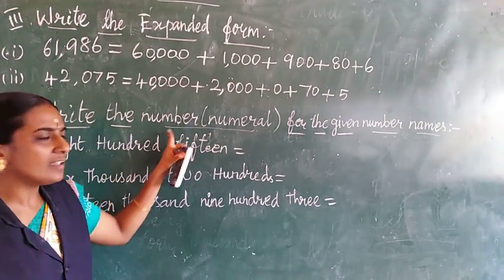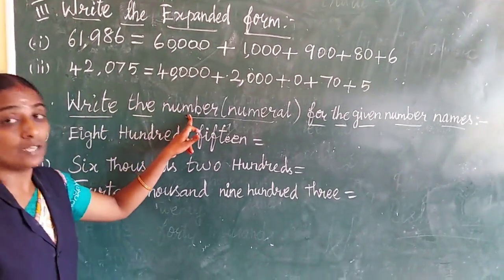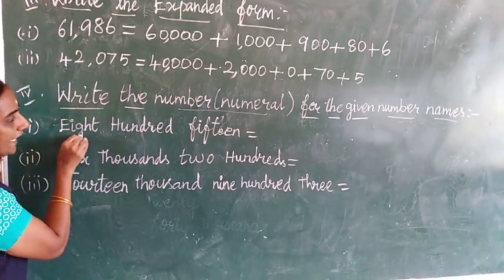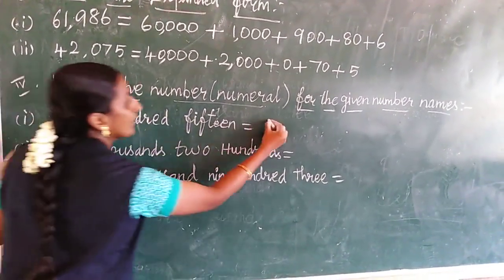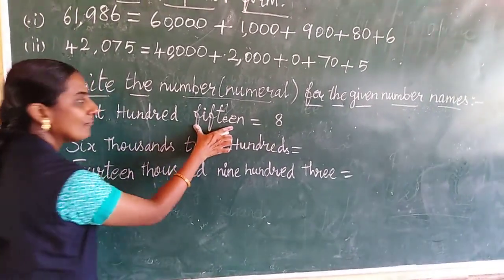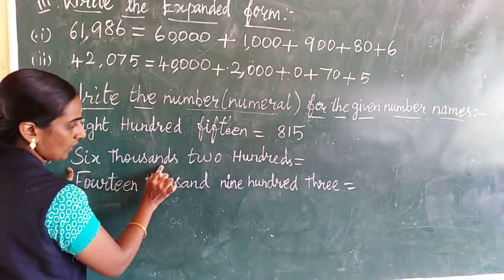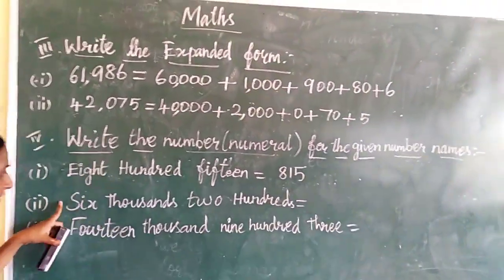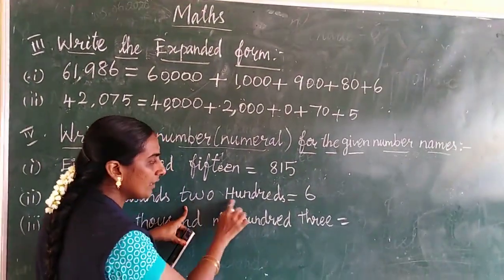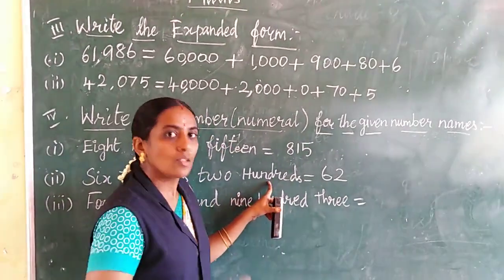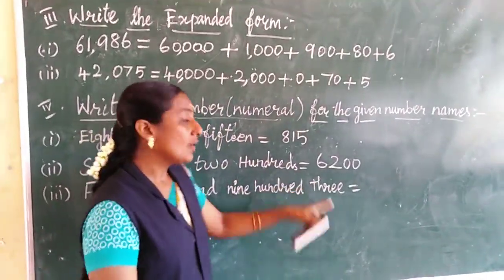Next one — write the numeral. Numeral means the same meaning for the given number names. I have written the number names, we will write the number — only numbers. First one: eight hundred fifteen. Eight hundred fifteen. Eight hundred means first we start with eight. Eight hundred, fifteen. Next one: six thousand two hundred — six thousand, two hundred. First we start here: six thousand, next two places — hundred. How many hundred? Two hundred. Tens place — one. So two hundred.